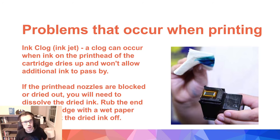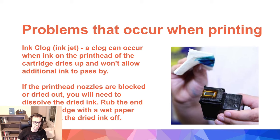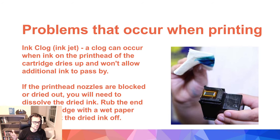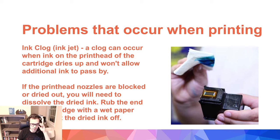The second problem that can occur is an ink clog, or inkjet getting clogged. This is a clog that occurs when ink on the printer head of the cartridge dries and won't allow additional ink to pass by. This occurs mainly on inkjet printers — laser jet ones use powder so they can't clog like this usually. If the printer head nozzles are blocked or dried out, you'll need to dissolve the dried ink, rub the end of the cartridge with a wet paper towel, and then stick it back into the printer and it should start working again.